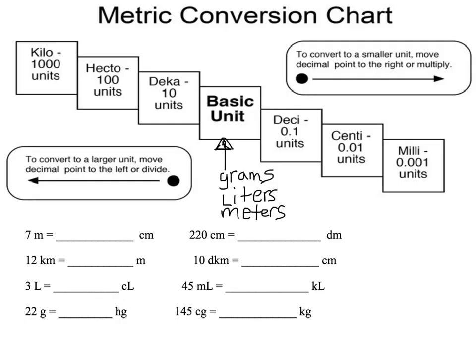As you move to the left of your basic unit, you will see that we are getting larger. So you need 10 meters in order to make a decameter, you need 100 meters to make a hectometer, and you need 1,000 meters to make a kilometer.